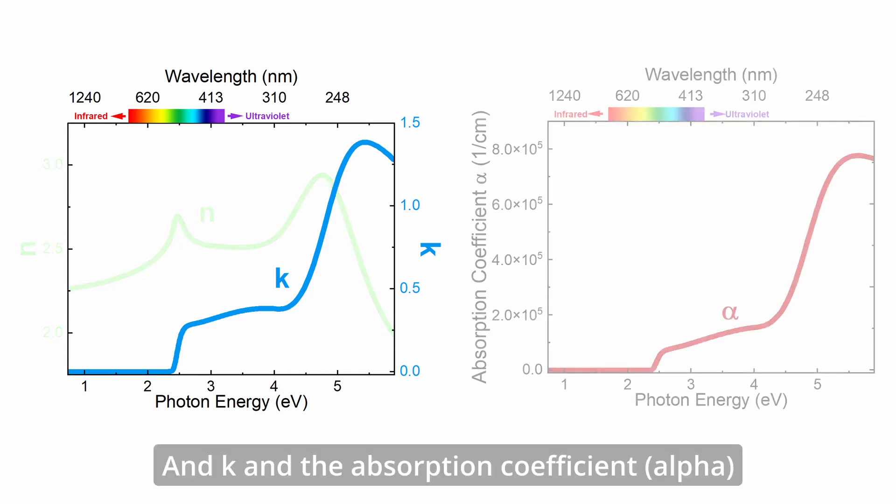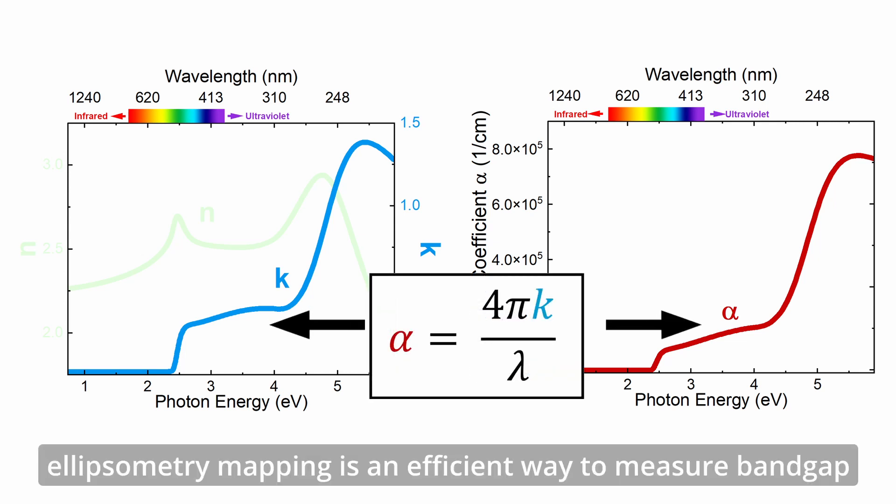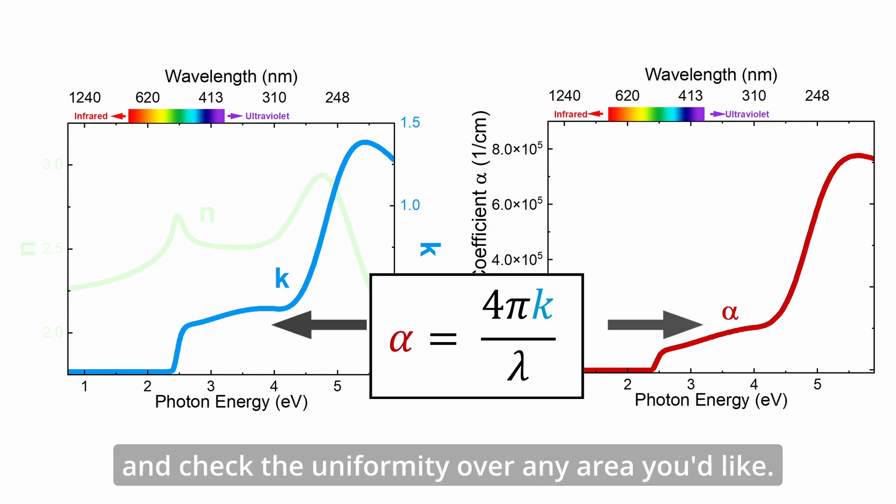and k in the absorption coefficient are easily convertible via a simple equation, ellipsometry mapping is an efficient way to measure band gap and check the uniformity over any area you'd like.